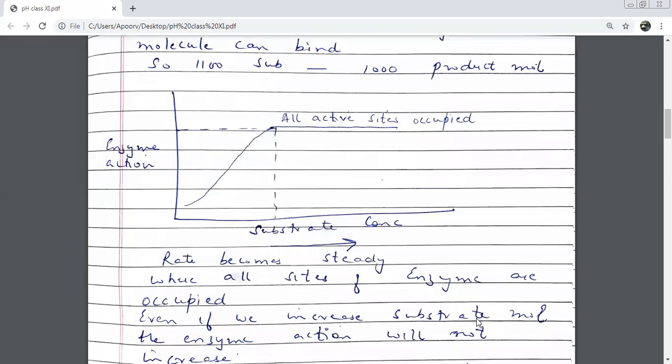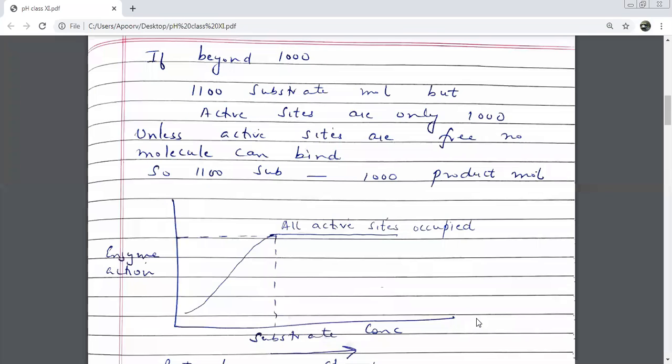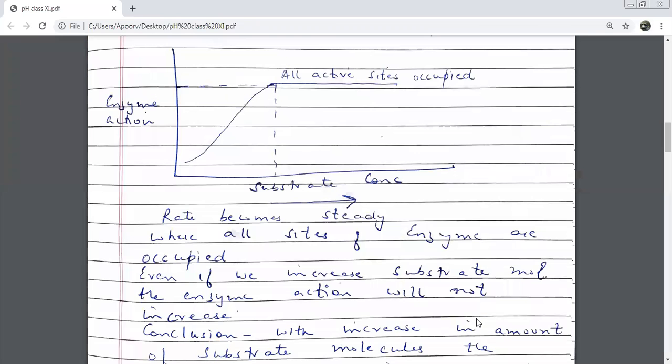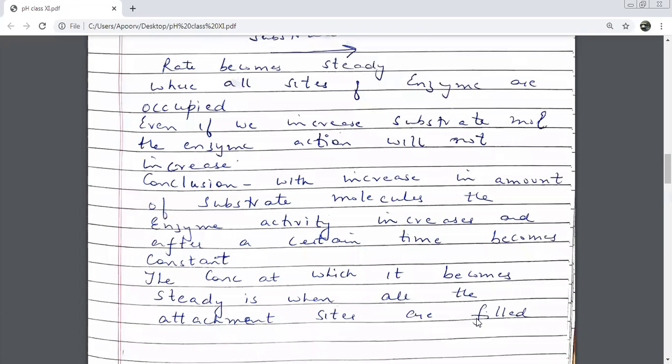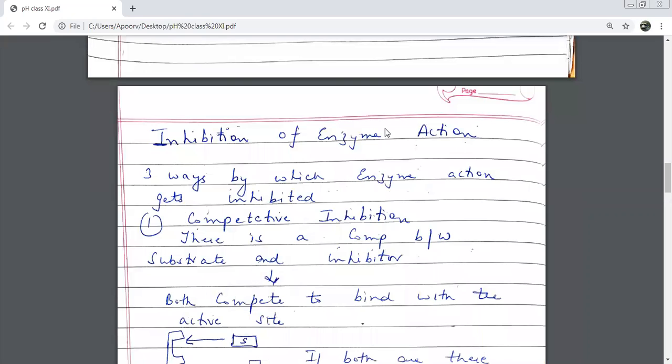So this is all that we have done today. Let's revise very quickly. I completed the factors which affect enzymatic activity today. And then I did inhibition of enzyme action. Actually, there are three ways of enzyme action inhibition. In the third way, I am not going to tell you. It's very complicated. In your book, in your syllabus, there is only one inhibition, and that is competitive inhibition.